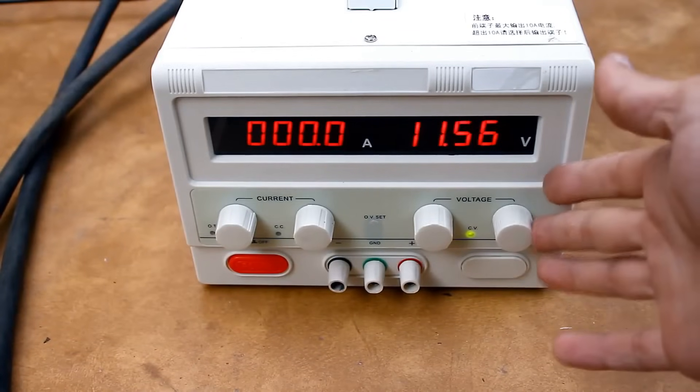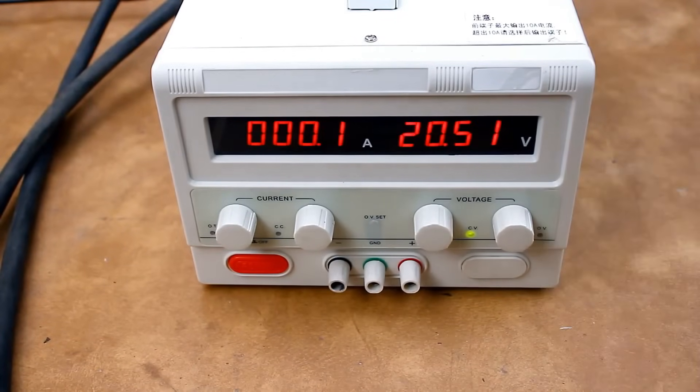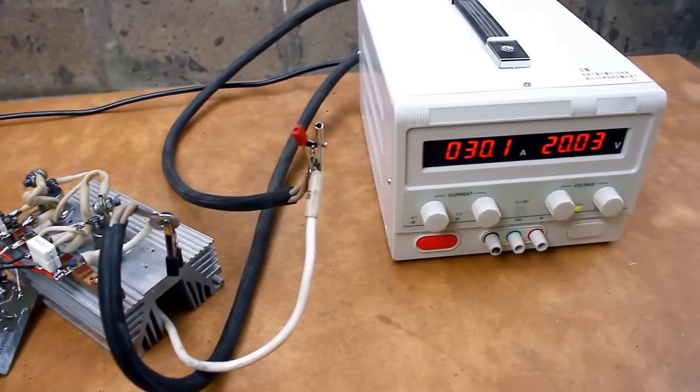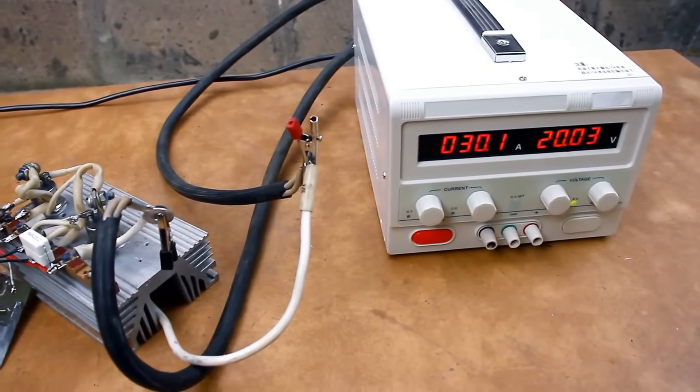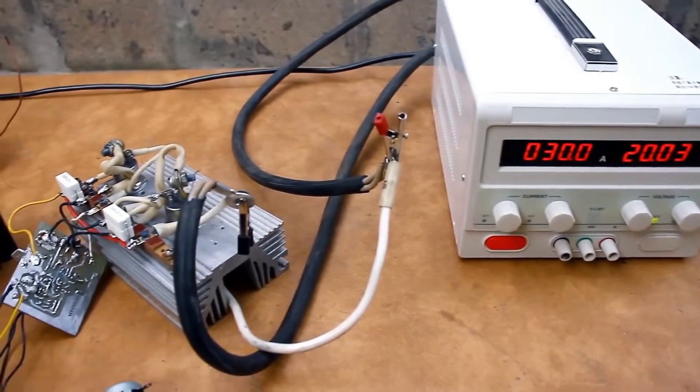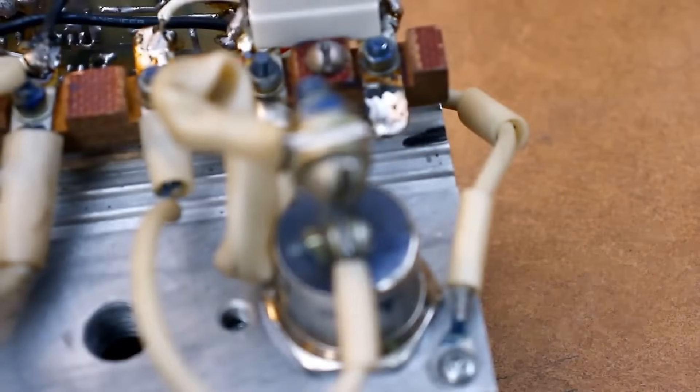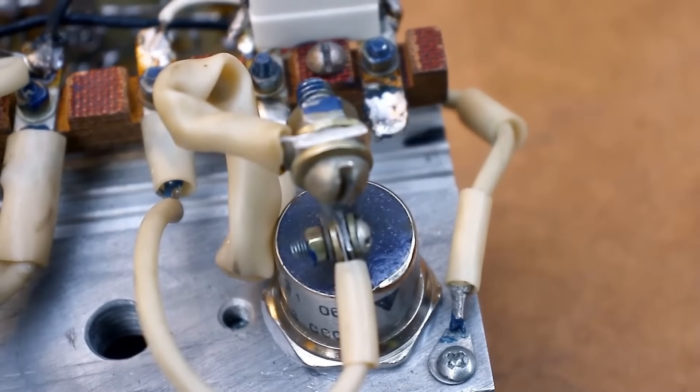And in the end, I decided to go all in. I set the lab power supply to 20V and loaded the circuit with a current of 30A. And that's already 600W of power, or 300W on each transistor, in the form of pure heat. Minus the power dissipated on the resistors.